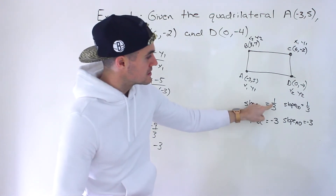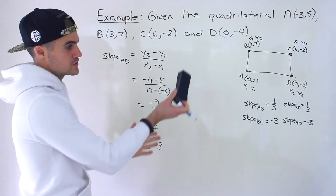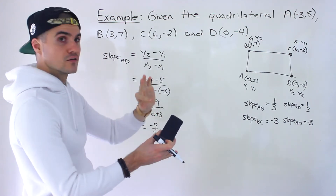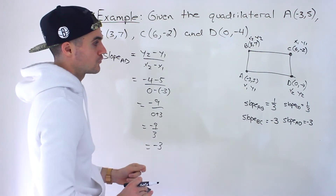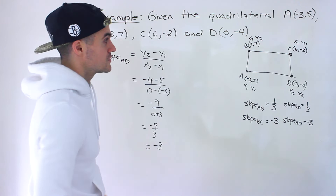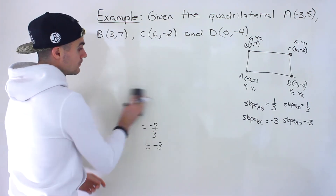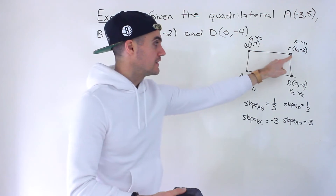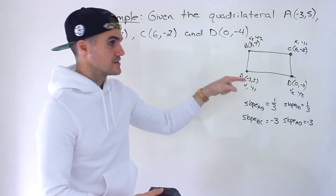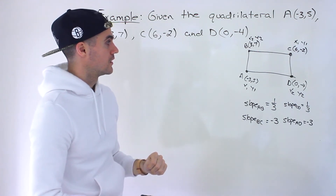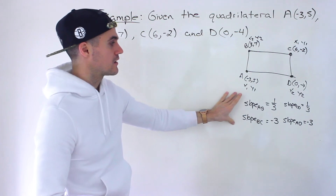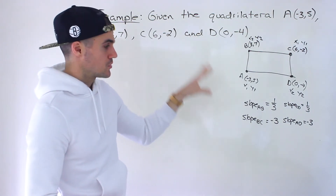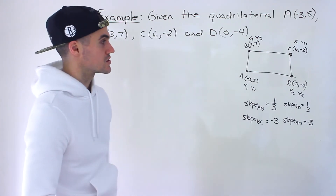With a rectangle, these slopes also have to be negative reciprocals of one another — which they are. If we take 1/3, flip it and change the sign, we get -3. Or take -3 over 1, flip it, change the sign, and we get 1/3. So this work is enough to verify we're dealing with a rectangle. If you were verifying a square, you'd also need to find all four side lengths and show they're equal. But for a general rectangle, the slopes are sufficient.